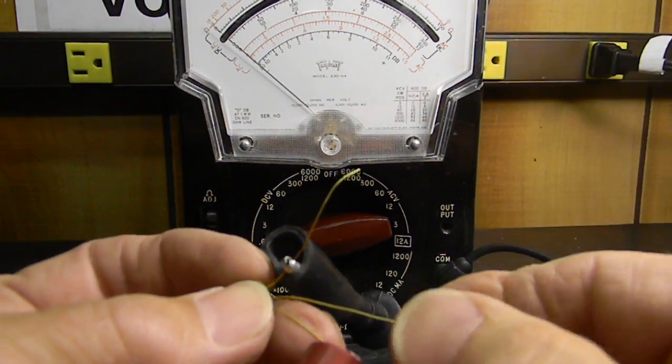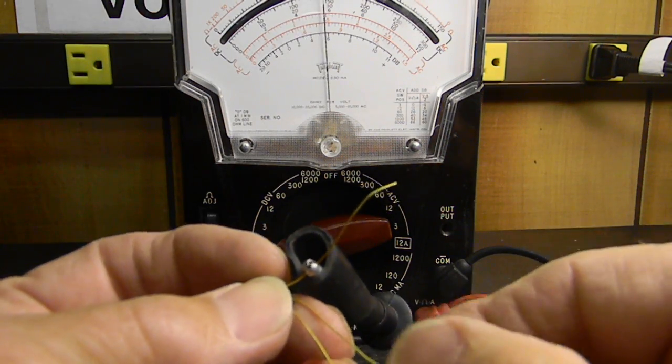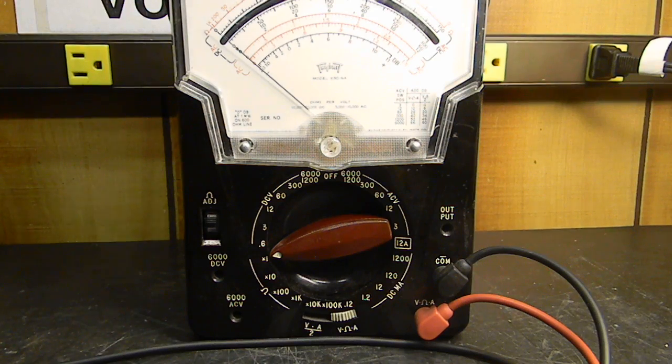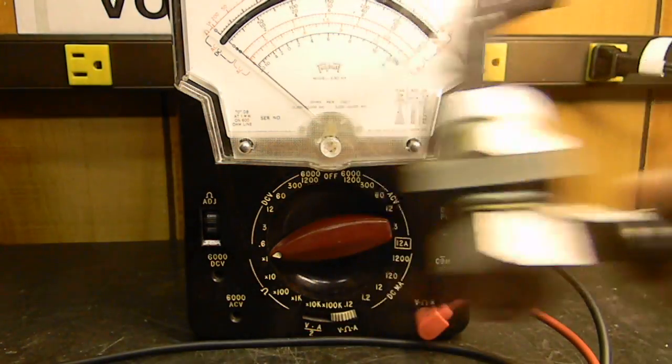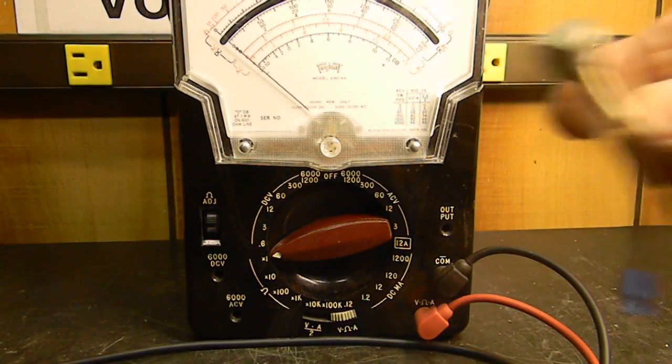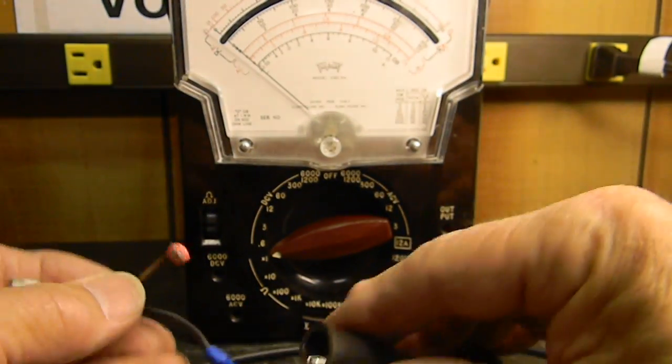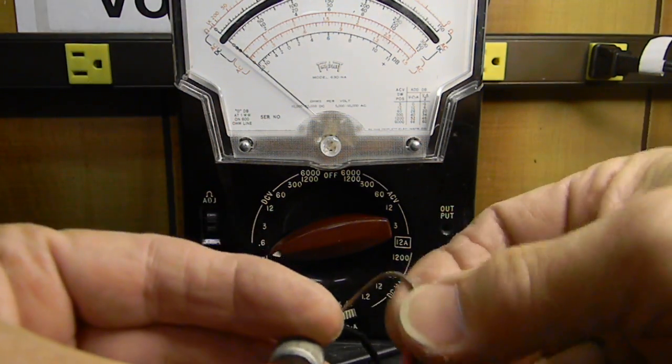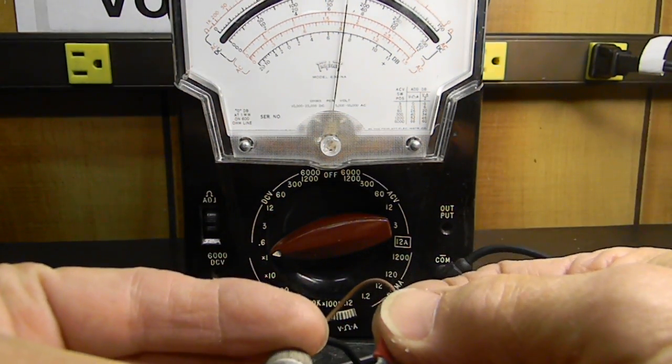Negative to cathode, positive to anode. Short the gate to the anode. Should turn on and stay on. There you go, that one's on. It certainly will not work, this meter will not work to check these guys. It may work, let's see if it'll work on this one. Cathode, anode, short the gate. Yep, see it actually works on that one too.